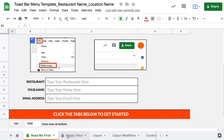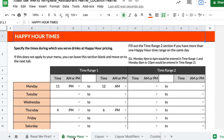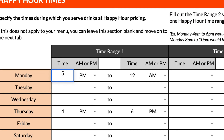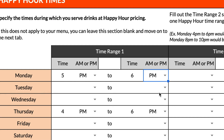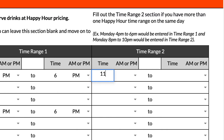Now let's open the Happy Hour tab. If your bar menu has happy hour pricing, use this page to input the hours you plan to serve drinks at happy hour pricing. If your bar doesn't offer happy hour prices, you can leave this page blank. If your bar offers more than one happy hour in a day, you can use the Time Range 2 section to input an additional happy hour.